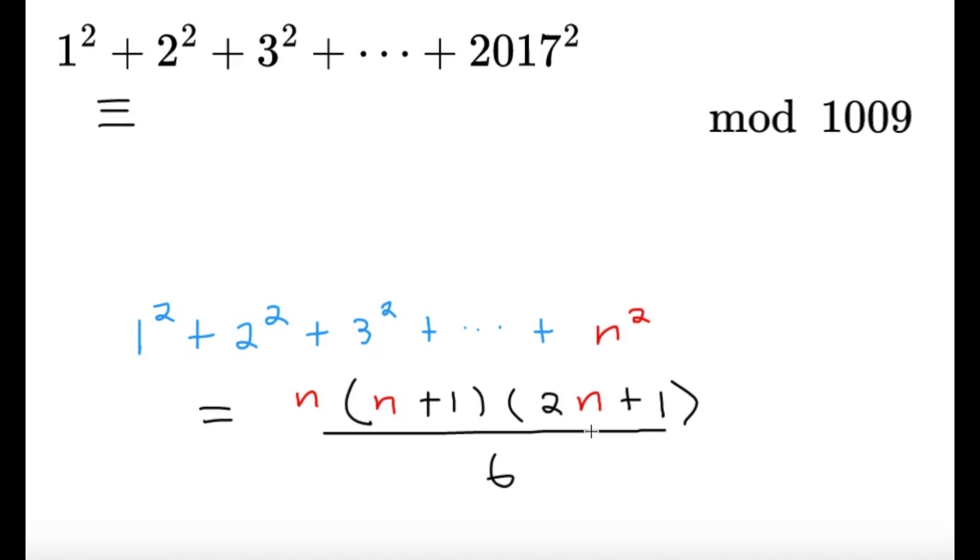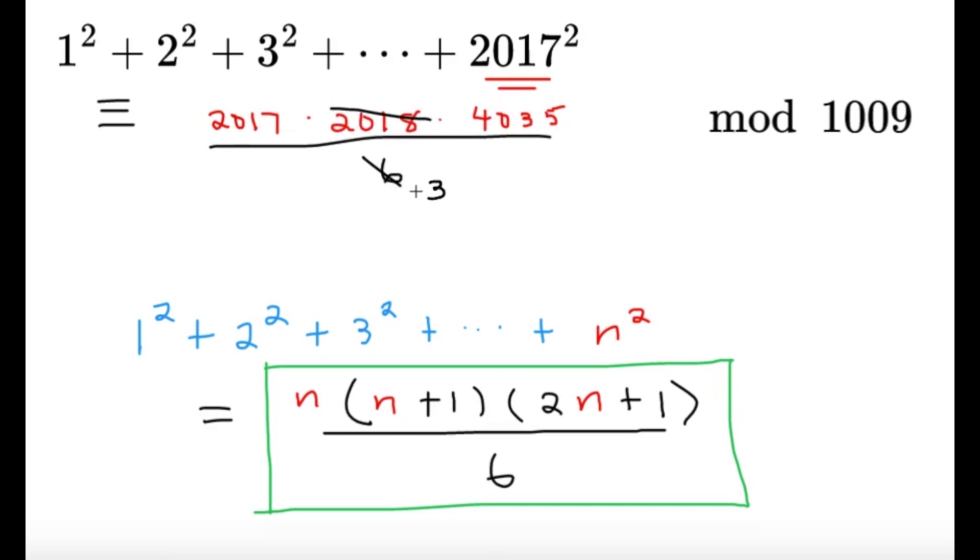1 squared plus 2 squared until n squared, the closed form for this sum is given to be this. So I can write this sum in terms of 2017. It's going to be 2017 times 2017 plus 1, which is 2018, times 2n plus 1. And you can easily do that. It's going to be equal to 4035. And we want to divide this expression by 6. We can do some cancellations. The 6 and the 2018 can cancel, so it's going to be 3 and 1009. The 3 and the 4035 can cancel, so it's going to be 1 and 1345.